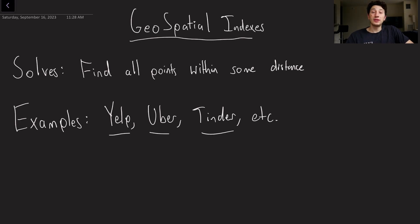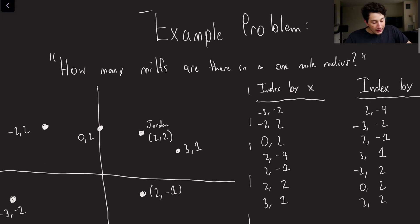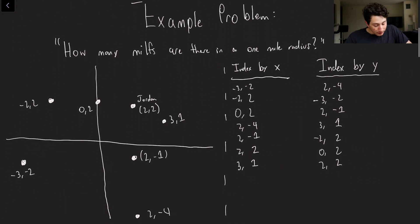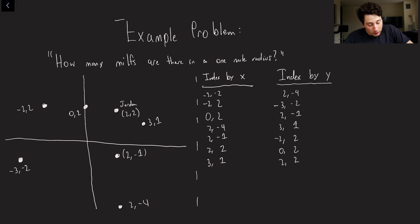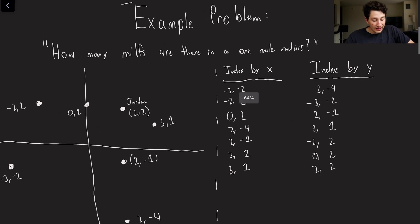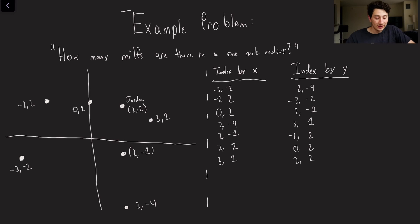Basically the main problem that this type of database or this type of index is going to solve for us is finding all the points within some distance. So if you've got a Cartesian plane and you've got a bunch of points scattered around you, it's going to help find that close radius of points. Let's go ahead and look at an example problem because that is probably going to make this most concrete and then you'll see why the need for specialized technology arises here.